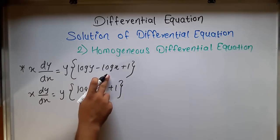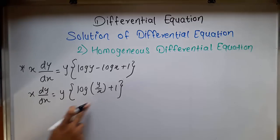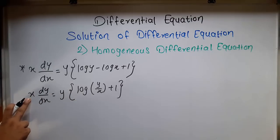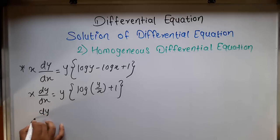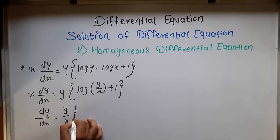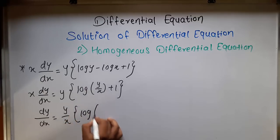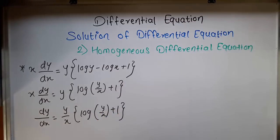That is, log a minus log b forms log(a/b). Transferring x to the other side, it becomes dy/dx equal to (y/x) times (log(y/x) plus 1). This is now in homogeneous form.